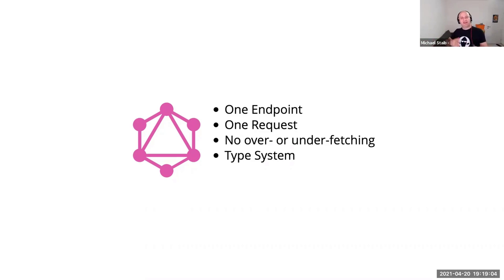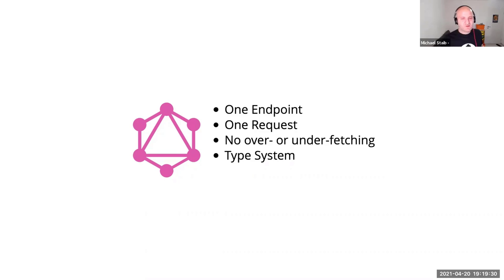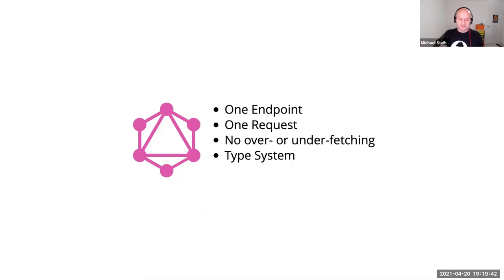GraphQL is also built on a strong type system, which is one of its key benefits — it lets you trust the backend. People sometimes compare this to Swagger, but Swagger's schema is just informational; there's no query engine that enforces those rules. With GraphQL, if the server tells you something is a string, an int, or non-nullable, you can trust that. If the backend violates the contract by sending null for a non-nullable field, the server throws an exception. This makes GraphQL very predictable to use.